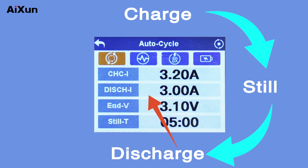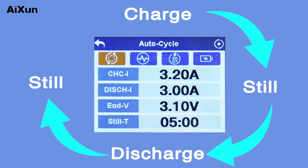The discharge current is the one set in the auto cycle interface. When the discharge voltage reaches the set voltage, the system will switch to the rest state. When the rest time is reached, the system will automatically switch to the charging state.